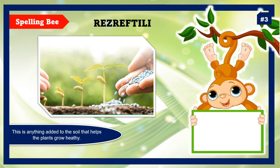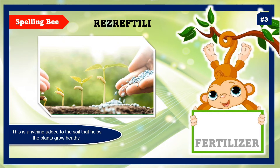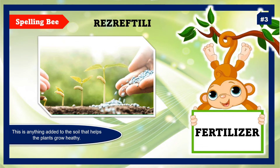Item number 3. Look at the jumbled letters and the picture. Your clue is: this is anything added to the soil that helps the plants grow healthy. The correct answer is fertilizer.